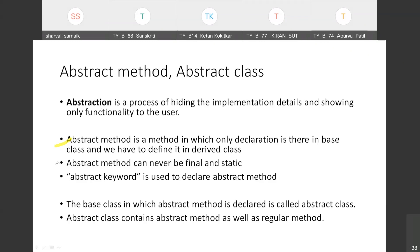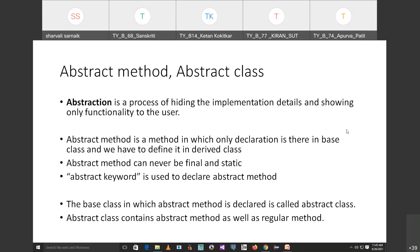Abstract methods can never be final or static — remember this is very important. If you are using an abstract class, you have to declare it with the keyword 'abstract'. If you are taking an abstract method, you have to declare it with the keyword 'abstract'. A base class in which an abstract method is declared we call that class an abstract class. In the abstract class there could be abstract methods as well as regular methods.